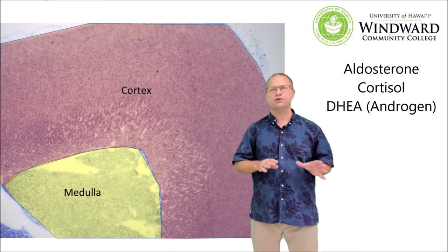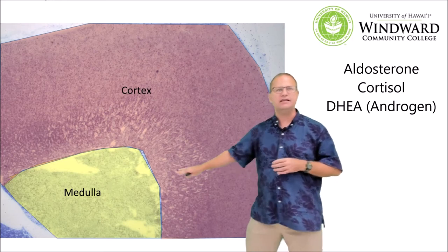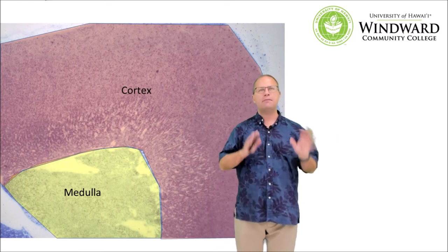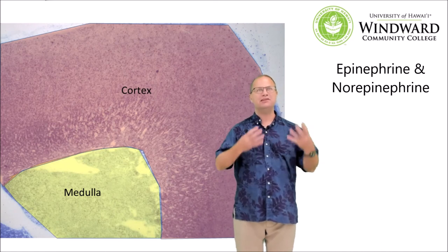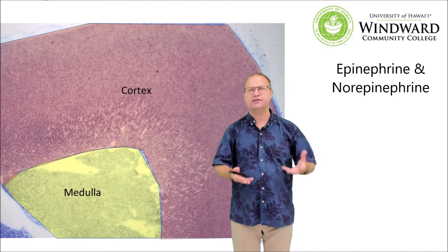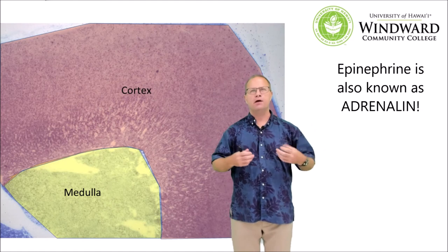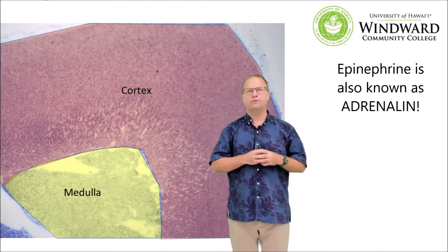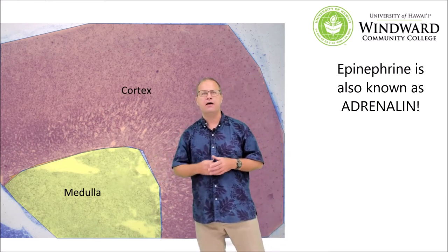On the inside we have the adrenal medulla. The adrenal medulla makes epinephrine and norepinephrine, which are catecholamine hormones that stimulate the body's fight or flight response. So if you almost get in a car accident, you'll feel a major surge of epinephrine, which causes your heart rate to go up and your pupils to dilate. All of that happens through the secretion of epinephrine and norepinephrine from the adrenal medulla.